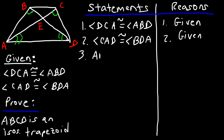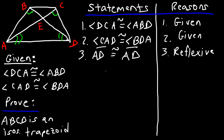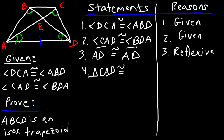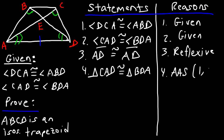Statement 3 — AD is congruent to AD. That is the common side of both triangles, based on the reflexive property. Statement 4 — triangle CAD is congruent to triangle BDA, based on the Angle-Angle-Side postulate using statements 1, 2, and 3.